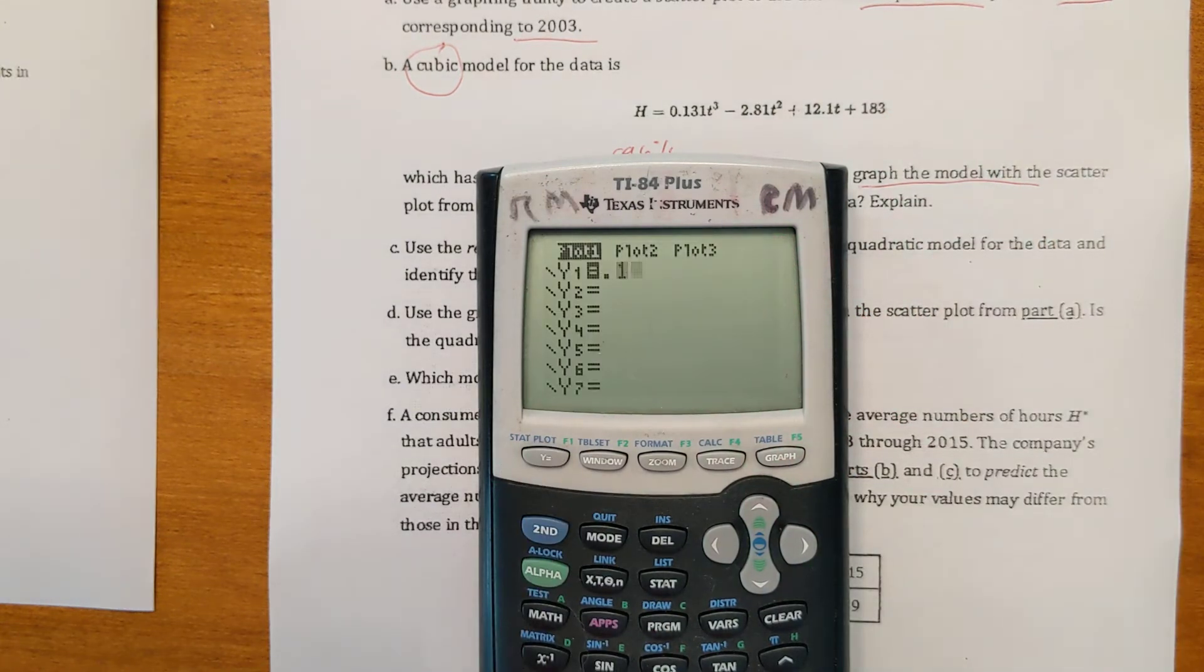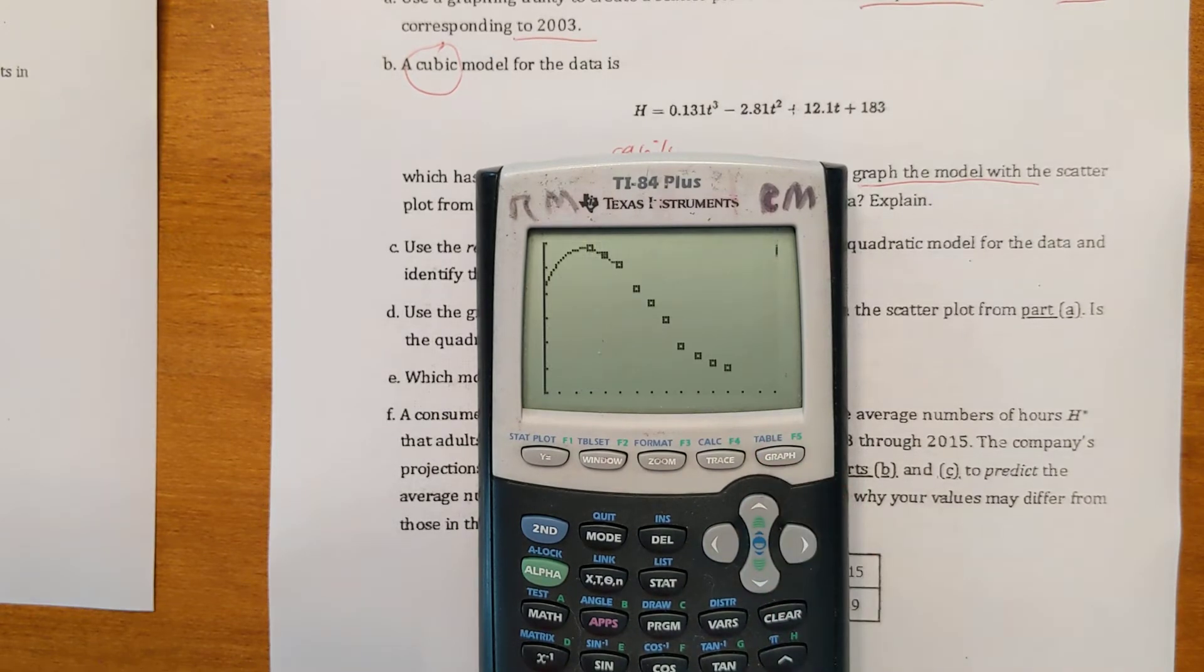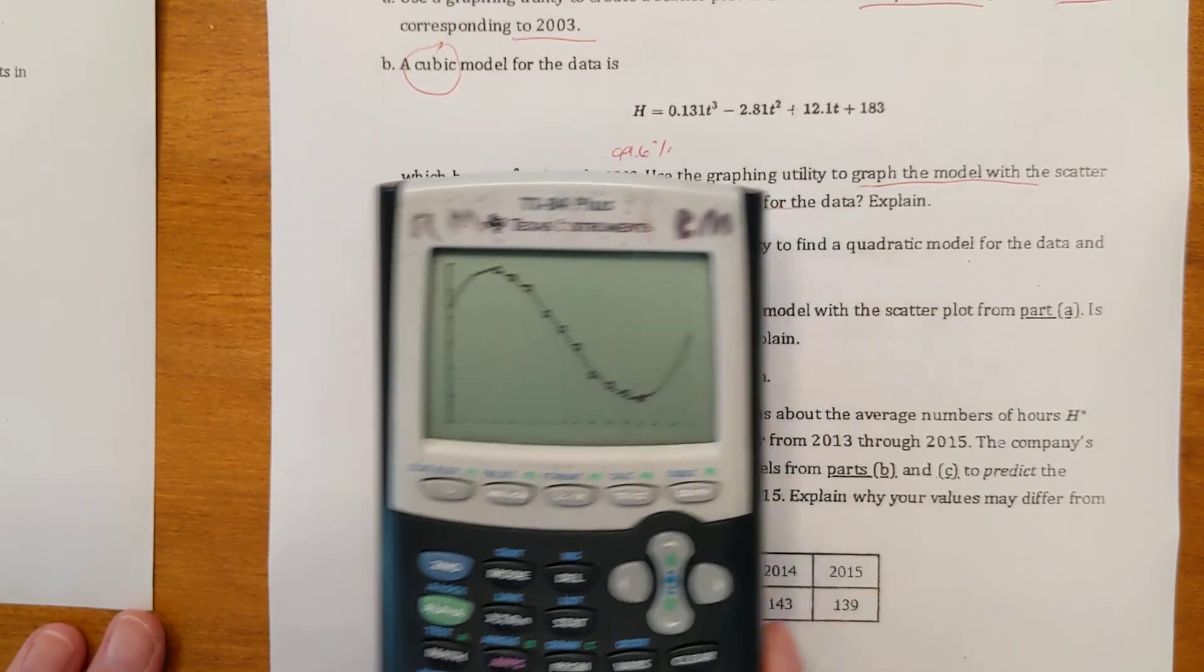They want us to graph theirs. So 0.131 t to the third, you can just use x for that, minus 2.81 x squared, plus 12.1 x plus 183, graph. And you can see it looks pretty good. It goes through most of the points.